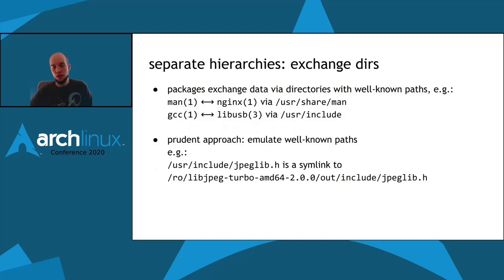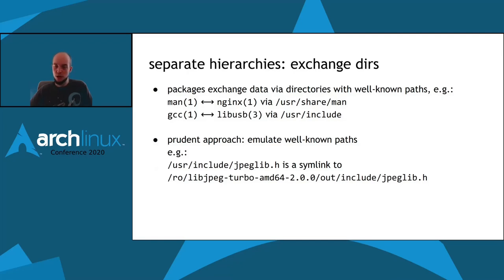Despite being located in separate hierarchies, packages sometimes need to exchange data with each other via directories with well-known paths. For example, the man page viewer in the man package will exchange data with the nginx package by looking up the corresponding page in /usr/share/man. The GCC compiler will exchange data with the libUSB package when linking software against it by looking into the corresponding header files in /usr/include. In DISTRI, /usr/include/jpeglib.h is a symlink to the fully qualified libJPEG location of jpeglib.h.